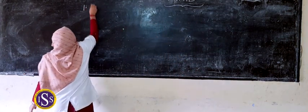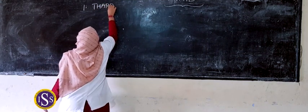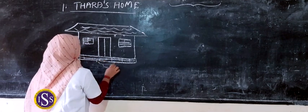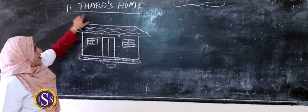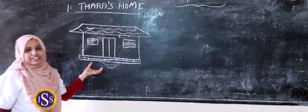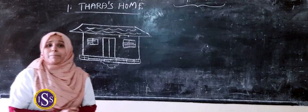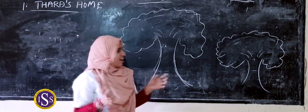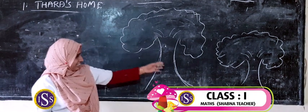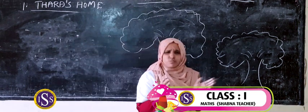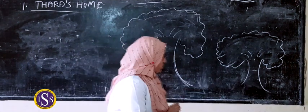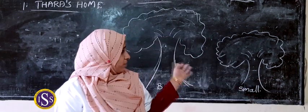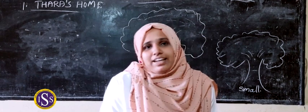This is the first page. This is the second page. You see two trees — one is big and the other is small. You draw the two pictures in your notebook and write: this tree is big, and this tree is small. Draw the picture in your notebook and we will see it in the next class. Bye.